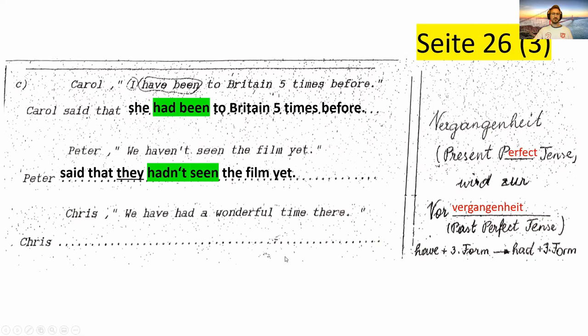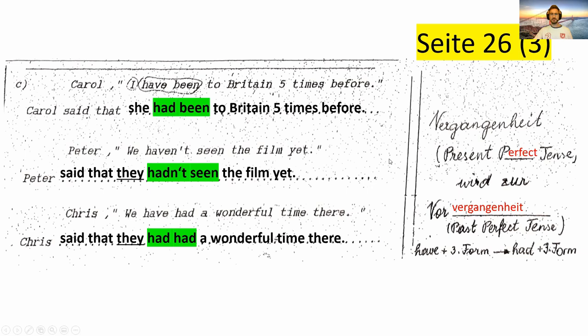And that's a special one. Chris: 'We have had a wonderful time there.' Und so komisch es auch klingt — aus dem 'have had' wird ein 'had had'. Zweimal 'had' hintereinander. Klingt komisch, ist aber so. Chris said that they had had a wonderful time there.